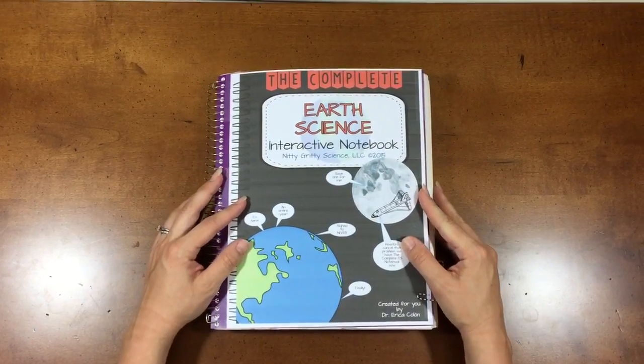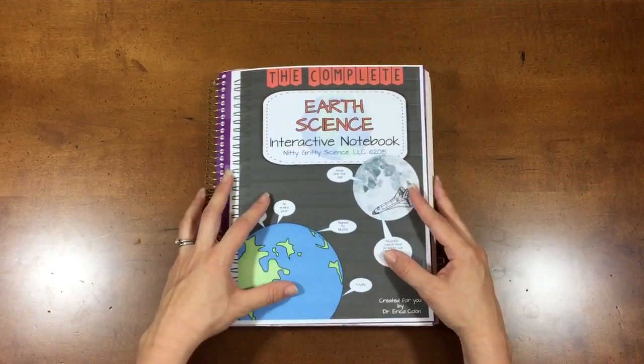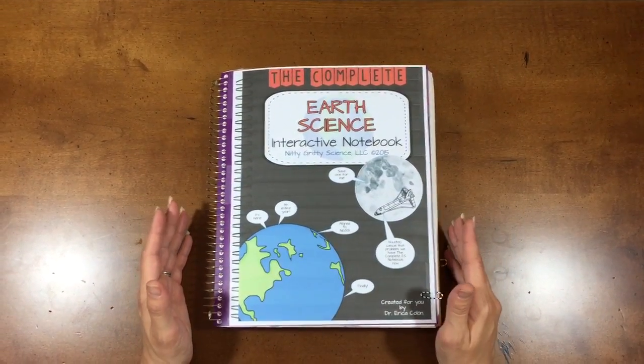The Complete has 12 different chapters. You can buy the entire bundle or you can purchase each chapter individually.